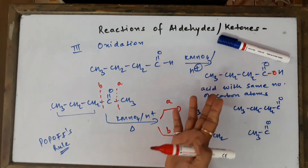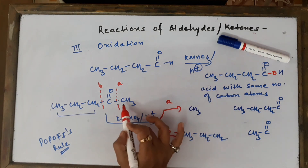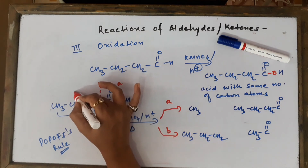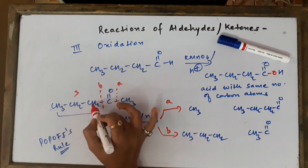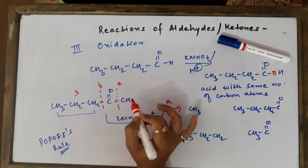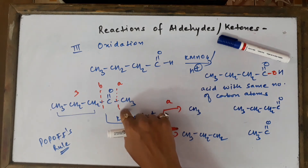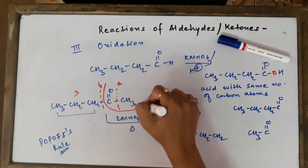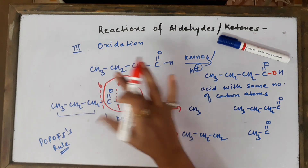This is where Popoff's rule applies. The rule states that whenever the ketonic bonds are broken, the smaller alkyl group should remain attached with the carbonyl carbon. Here, one alkyl group has three carbon atoms and the other has one carbon atom (methyl), so the smaller one is the methyl group, which is retained with the C=O.